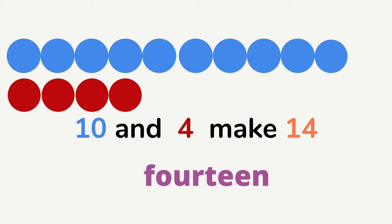Alright, hold on. The last one is 15. Now, let's count the blue dots first. How many blue dots are there? 10. How many red dots are there? 5. 10 and 5 make 15. F, I, F, T, E, E, N. 15. Good!